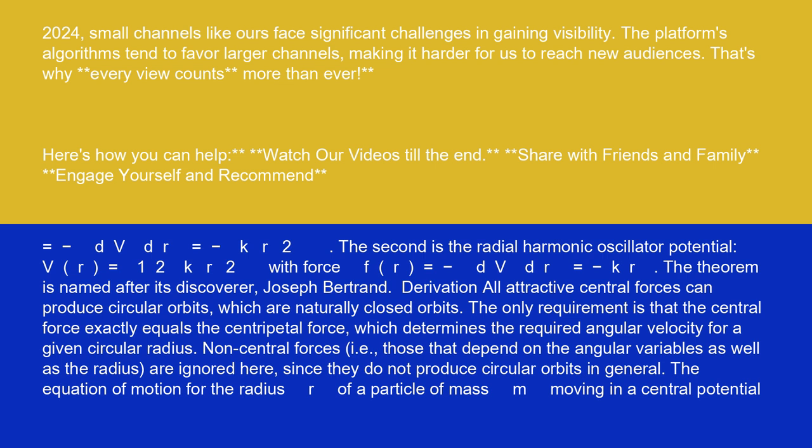The second is the radial harmonic oscillator potential, V(r) equals one-half k r squared with force F(r) equals minus dV/dr equals minus k r. The theorem is named after its discoverer, Joseph Bertrand.